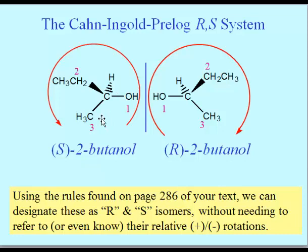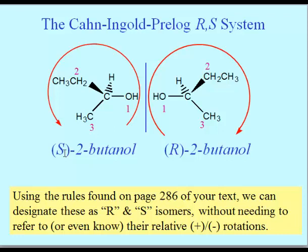What we do is draw the enantiomer so that the fourth-ranking substituent — in this case hydrogen — is the one receding away from us. With chiral compounds it's oftentimes a hydrogen that is that fourth-ranked substituent. When I look at the other three substituents going one, two, three, this big red looping arrow shows we go counterclockwise from one to two to three, giving us S. For the other enantiomer, going one to two to three is clockwise, giving us R.